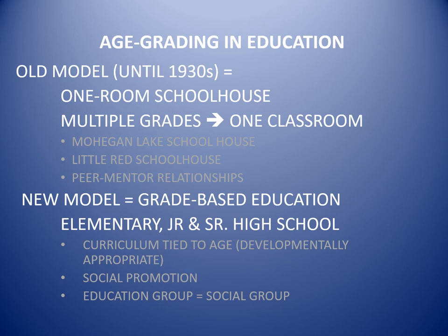Today you might have a student who had interrupted education because of a move or a sickness, or a student who failed a subject and was held back. Social promotion means you allow a student who may not have mastered the material to move forward with the other students in their class because that's been their peer group, kept together from kindergarten up to 12th grade graduation. Some argue you should move ahead based on mastery of material, but others say this can be socially stigmatizing and demeaning.